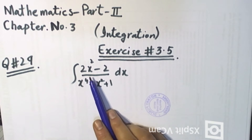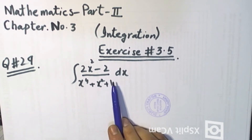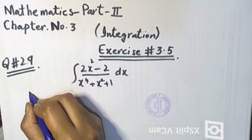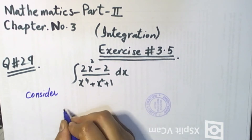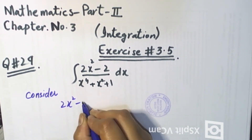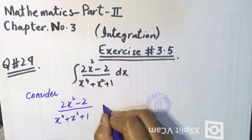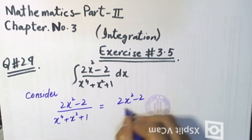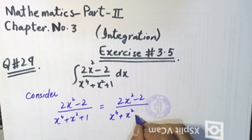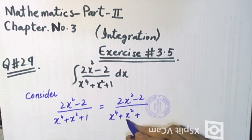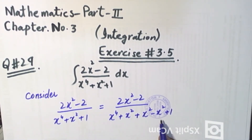Integral of (2x² - 2) over (x² + 1) into dx. Consider: (2x² - 2) over (x⁴ + x² + 1). Here x⁴ + x² + 1 can be written as (x² + 1)² minus a complete step expression.